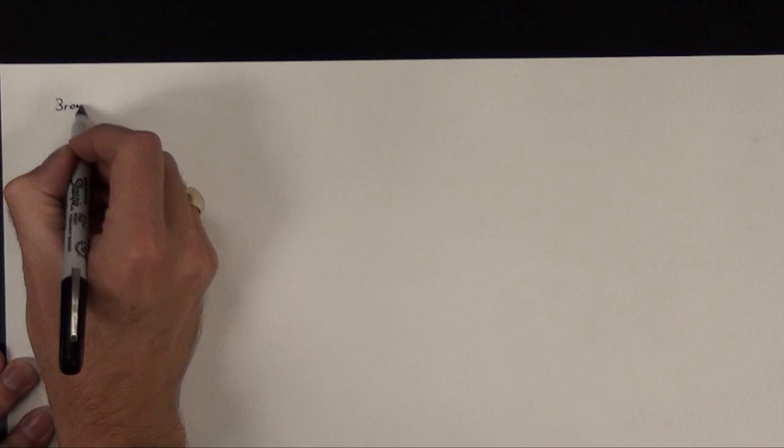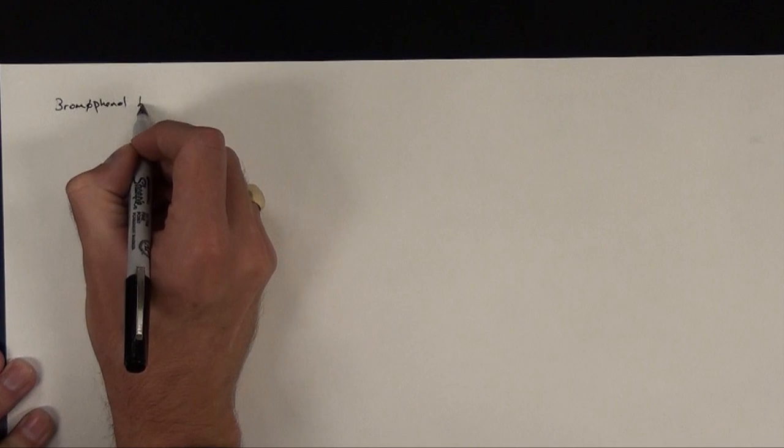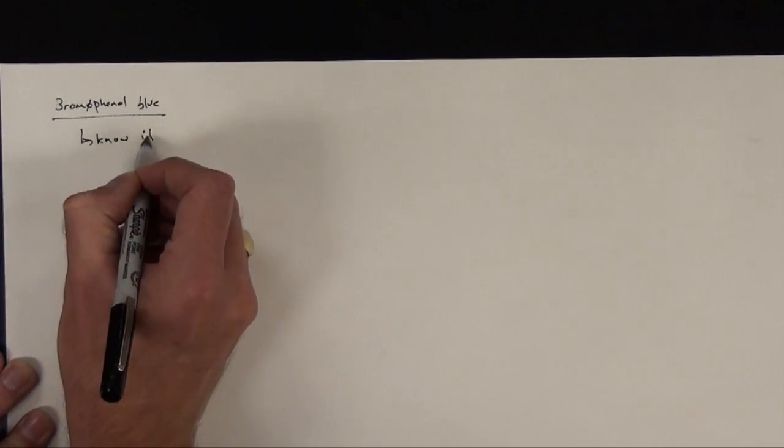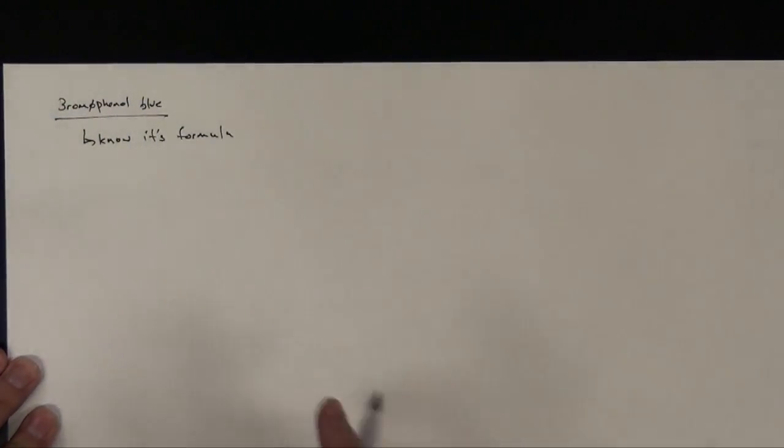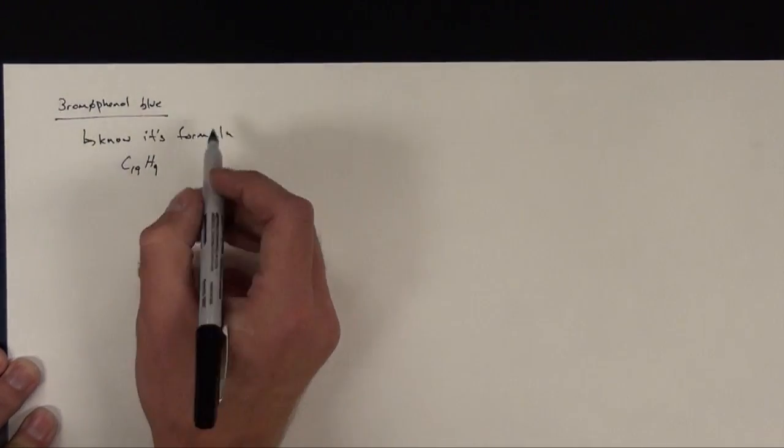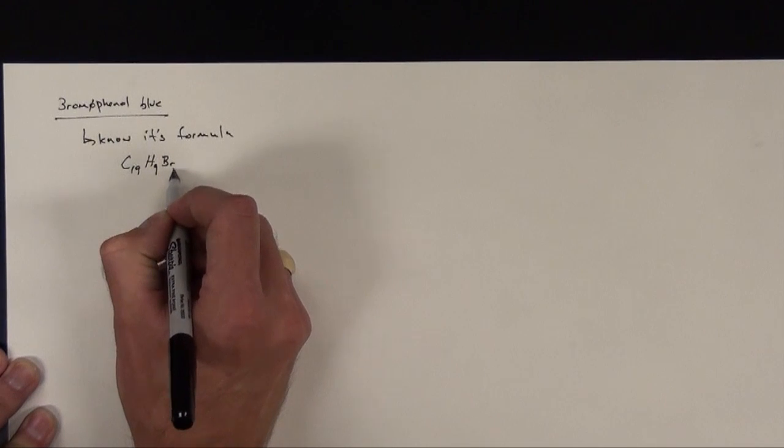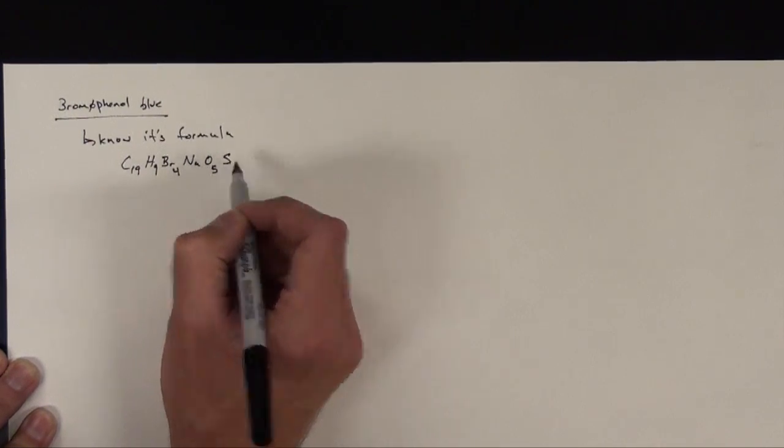Alright, so once again to figure out the molarity of Bromophenol Blue, I'm going to have to know its formula. So doing some searches, or perhaps maybe it's on the chemical already, the formula for Bromophenol Blue, and this is a sodium salt, is C19H9Br4NaO5S.